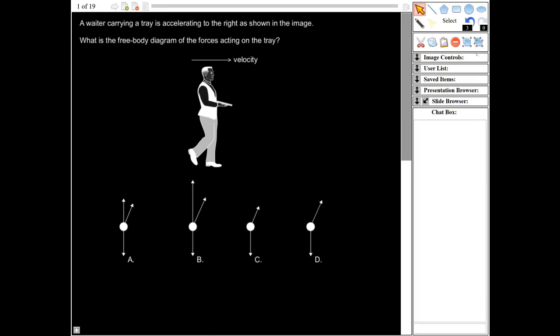What is the free body diagram for the forces acting on the tray? Alright, so we can see here that we've got a velocity over to the right, which means we're going to have to have a net force acting to the right, since it says the tray is accelerating to the right.